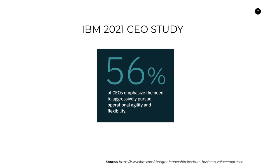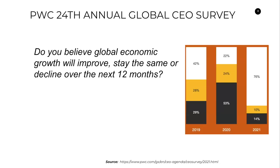56% of CEOs emphasize the need to aggressively pursue agility and flexibility and operational agility — not just product execution but how you run your business in general. Another interesting study was the PwC CEO study, which found something really interesting around the economic growth outlook. Not only do we need to be adaptable and nimble, we're also seeing a lot of growth happening. Those in Australia in particular would have seen a lot of growth in the job market, stock market, property market — all these things are creating really good conditions for business.